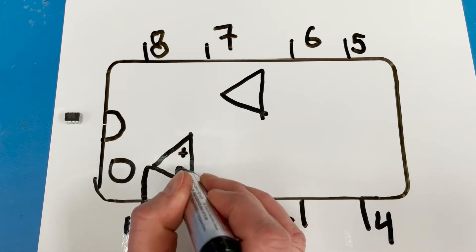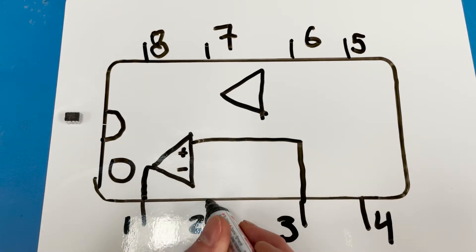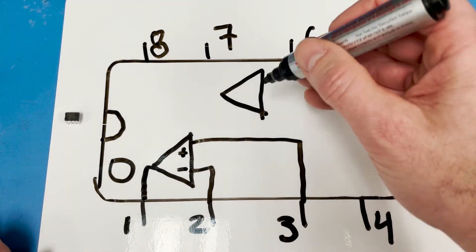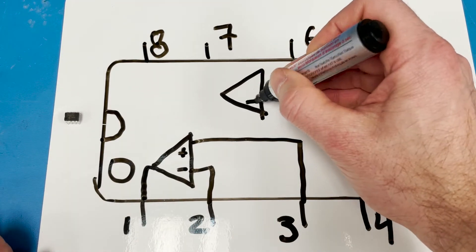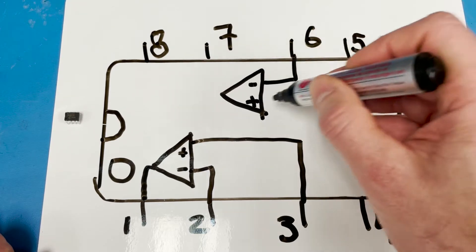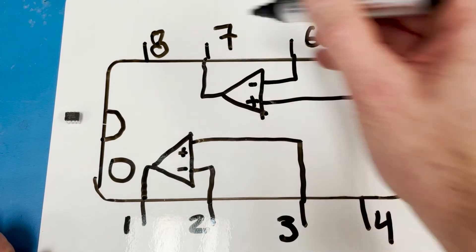So that's our non-inverting input. So pin 3 goes to the non-inverting input. Pin 2 goes to the inverting input. Pin 1 is the output. And then on this op-amp, which sometimes is called B, pin 6 is our inverting. Pin 5 is our non-inverting.